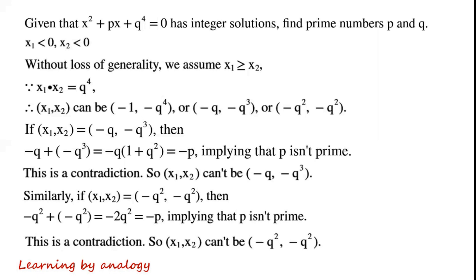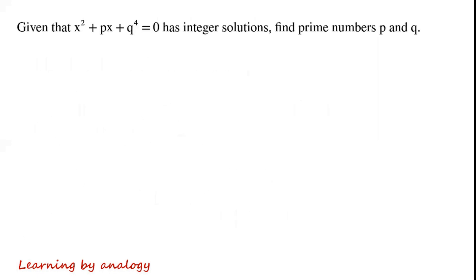Similarly, the case x1, x2 equals minus q squared and minus q squared also leads to a contradiction. So x1, x2 can only be minus 1 and minus q to the power of 4.